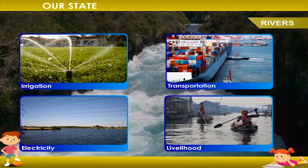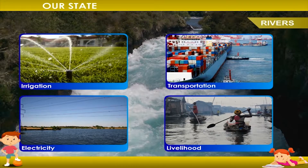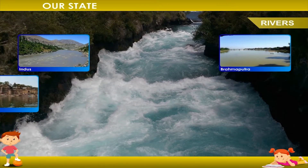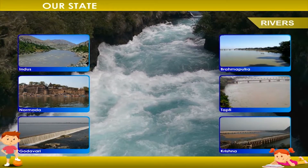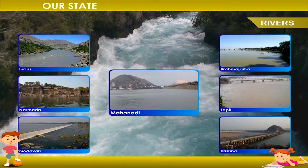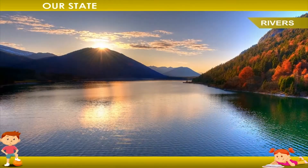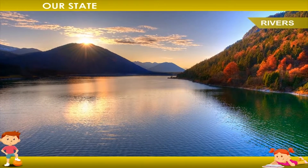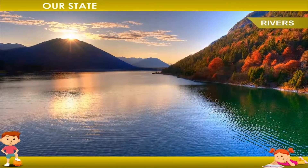Seven major rivers along with their tributaries make up the rivers of India. These are the Indus, Brahmaputra, Narmada, Tapti, Godavari, Krishna, and Mahanadi. The water from these rivers is diverted into canals, which can take river water to far-off fields where there is less water, useful for farmers to irrigate their lands.